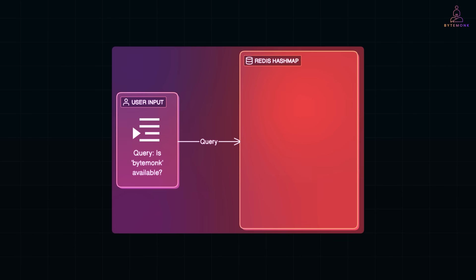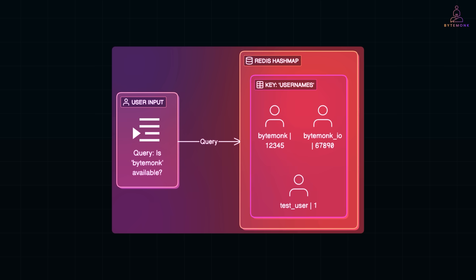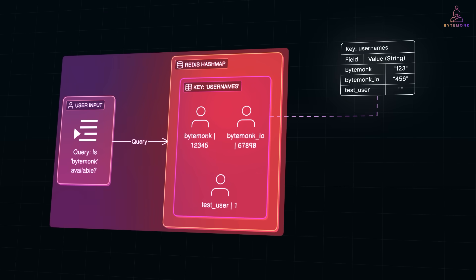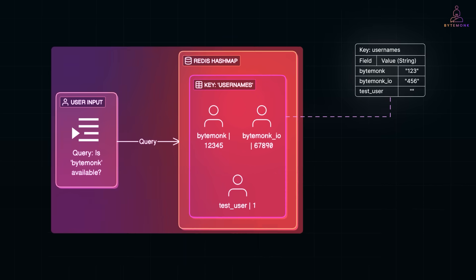To understand how these systems achieve such speed, let's start with a Redis hash map — a powerful and efficient data structure often used in caching layers. In Redis, a hash map lets you store multiple field-value pairs under one key. For username lookups, each field can represent a username and its value could be something lightweight, like a user ID or even a placeholder flag. When a user checks if a username is available, the system queries this hash map. If the field exists — that is, if the username is already in the map — that's a cache hit and Redis returns a result instantly.